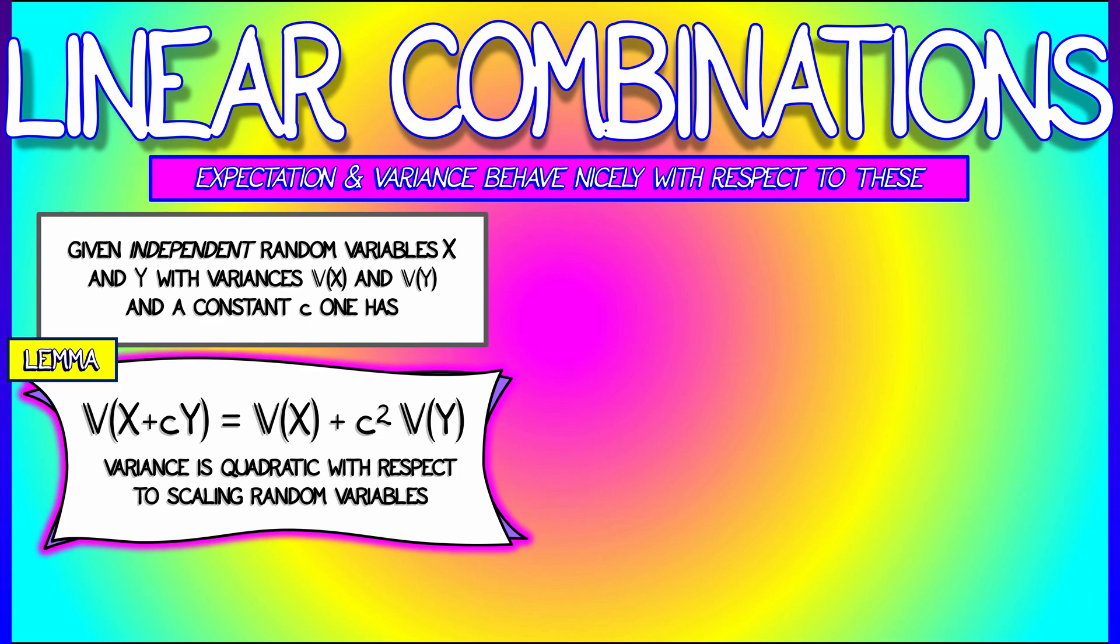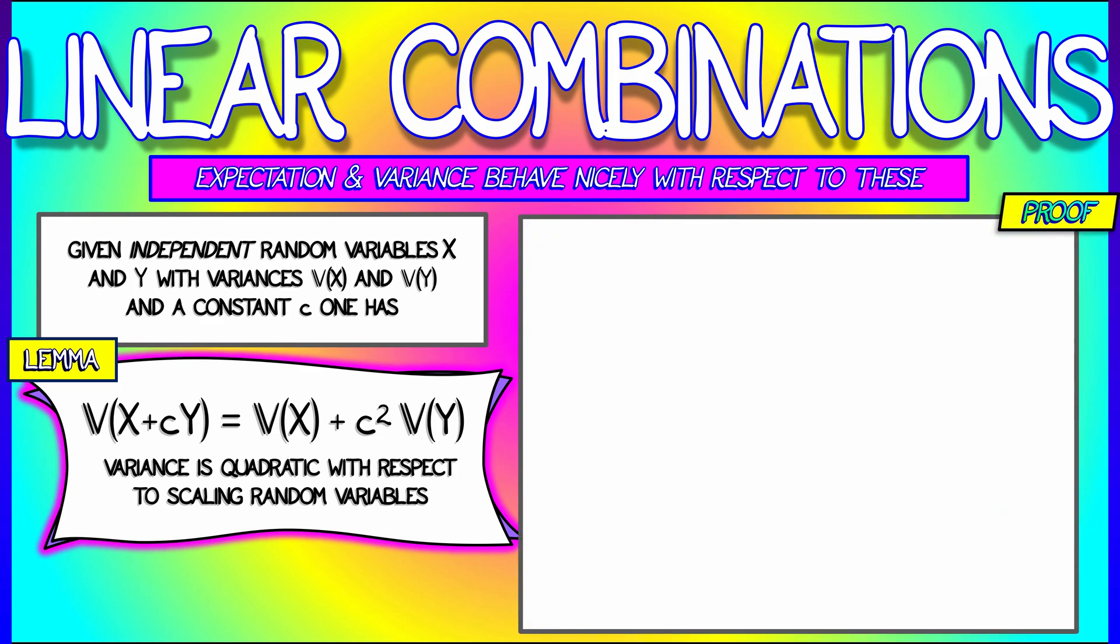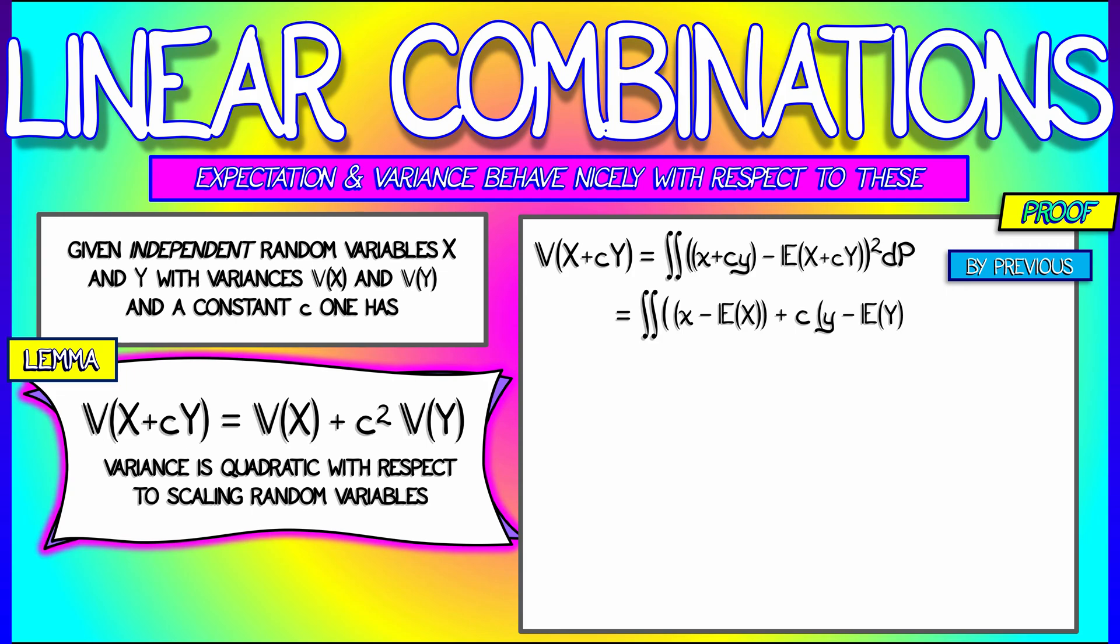This is fairly apparent from the definition of variance. The details of the proof are a bit complicated, but stick with me here. What we really need to do is look at the difference between X plus cY and the expectation of X plus cY. Take that difference, square it, then integrate with respect to the joint probability. We know what the expectation of X plus cY is—we just figured that out.